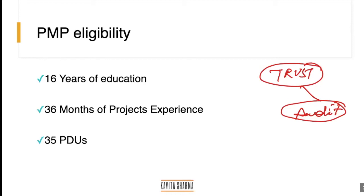A participant asked about a large ongoing project — transferring technology from the US to Ireland, running three and a half years and currently about 60% complete, with phases already completed and now in execution phase. Kavita confirmed this is a big turnkey project. You can write one project entry with a start date and 'yet to be closed' as the description — that counts.